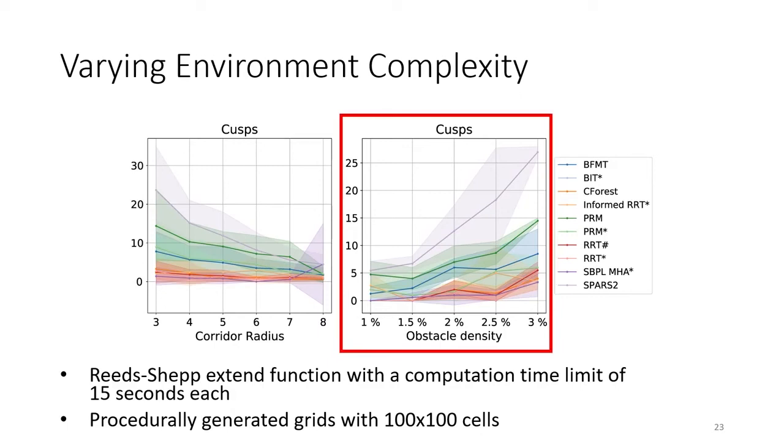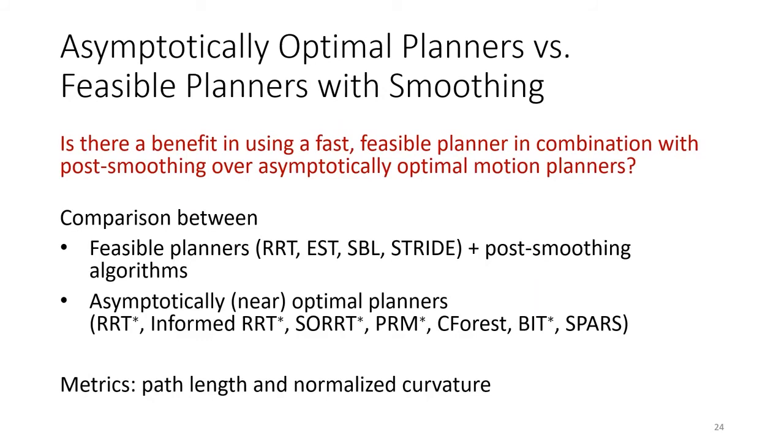BenchMR allows us to use different combinations of feasible motion planners and post-smoothing algorithms. Such combinations have rarely been thoroughly evaluated and compared against asymptotically optimal planners. In this experiment, we show such a comparison and analyze the performance of those two classes of algorithms in terms of path length and normalized curvature. The comparison is performed using the Reeds-Shepp extend function.